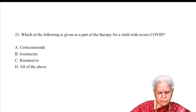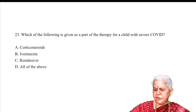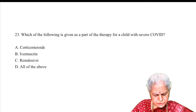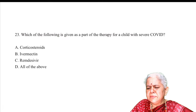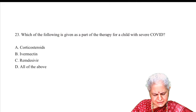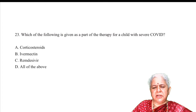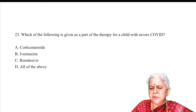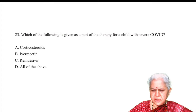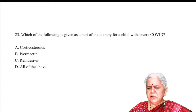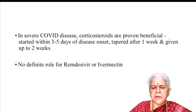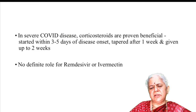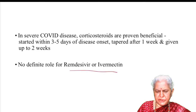Question on severe COVID therapy in children: which drug is given? Answer A — corticosteroids. Corticosteroids are the only proven drug. Remdesivir and ivermectin have no definitive role in children. The steroid protocol: start within 3–5 days, begin tapering by day 7, use for approximately 2 weeks total — short course with a stiff initial dose followed by taper over 1 week.